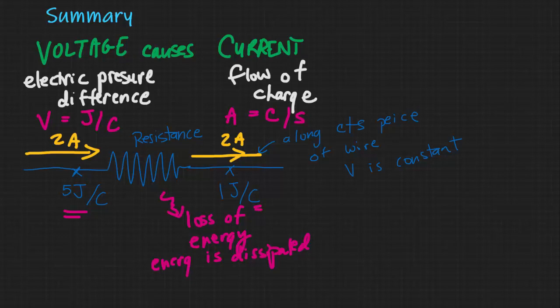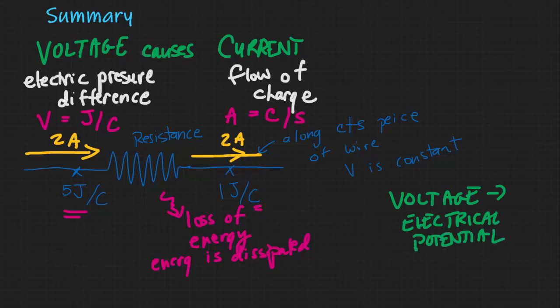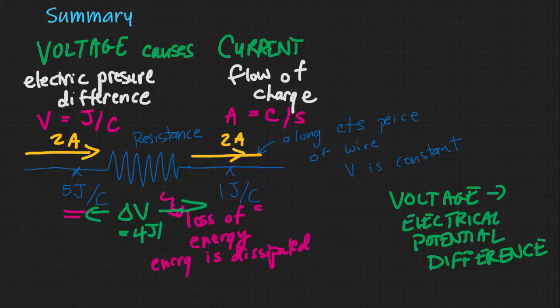When we talk about voltage, we usually mean electrical potential difference. We would talk about the voltage between two points as being equal to 4 joules per coulomb. It's that electric potential difference — that voltage — that drives the current, drives the charge flow. We refer to 5 joules per coulomb as electric potential, and 1 joule per coulomb as electric potential, but the delta V — the electric potential difference, or voltage — would be 4 joules per coulomb, and that's what drives the current.